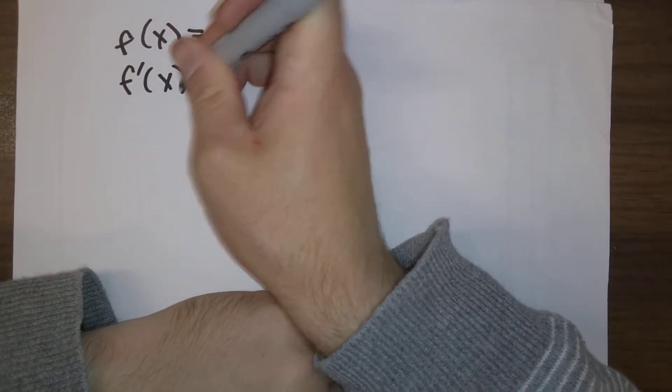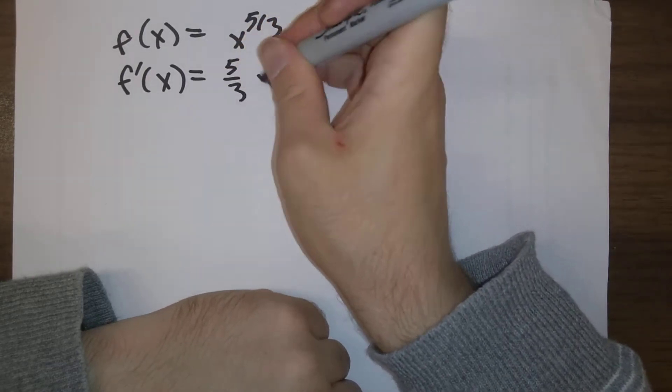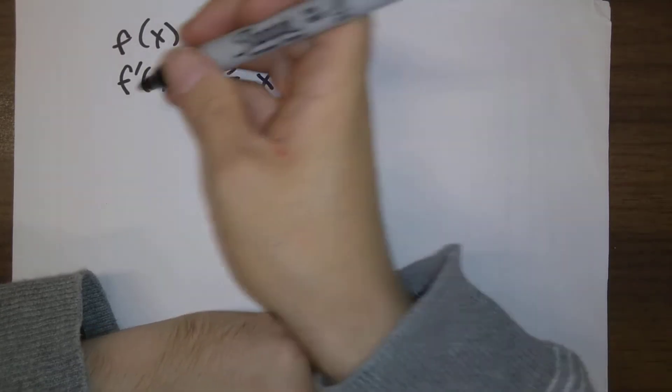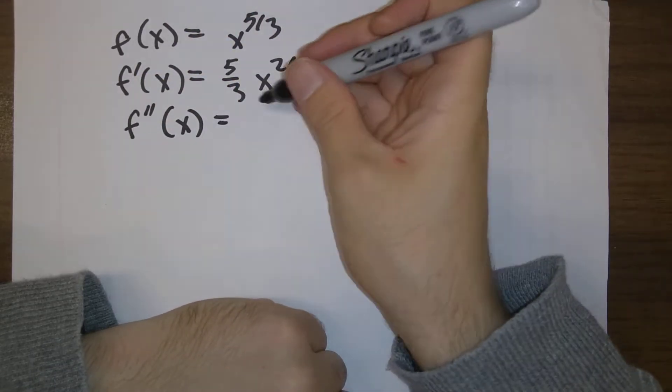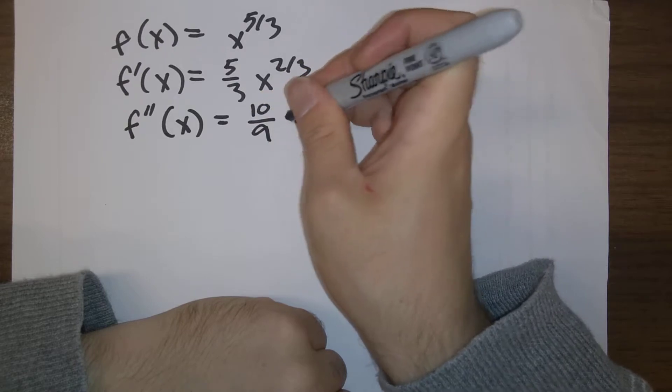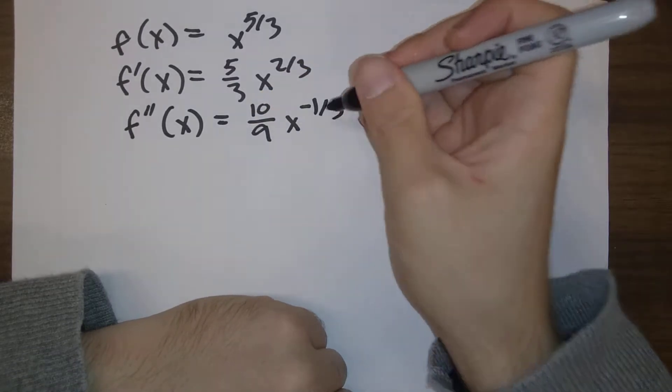Now, the first derivative is going to be five-thirds x to the two-thirds. The second derivative is going to be ten-ninths x to the minus one-third power.